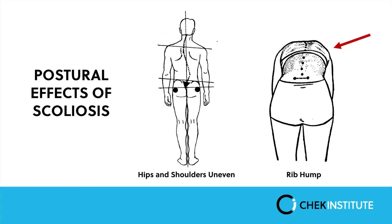The postural effects of scoliosis, as shown in the diagram, include not only curvature of the spine but also a slanted pelvis — one iliac crest higher than the other — and one shoulder higher than the other. With a structural scoliosis, as the person bends forwards, the spinal curvature remains and you'll also tend to see a hump on one side of the rib cage. With a functional scoliosis, the curvature will actually disappear on bending forwards, indicating it may be correctable with exercise.